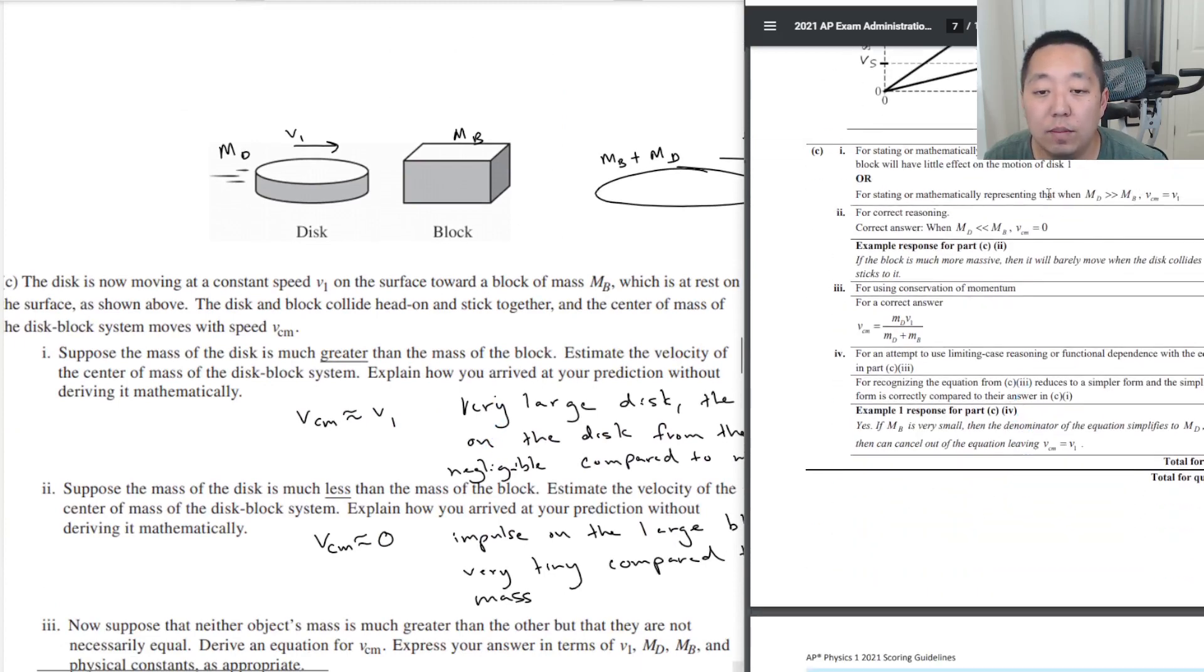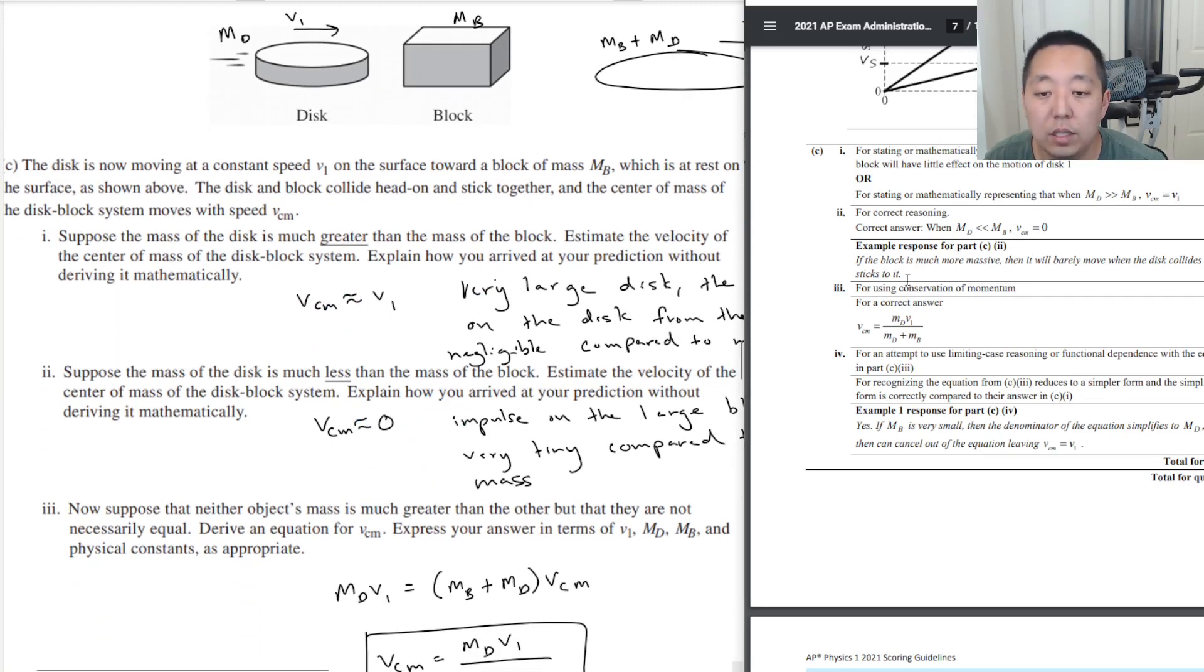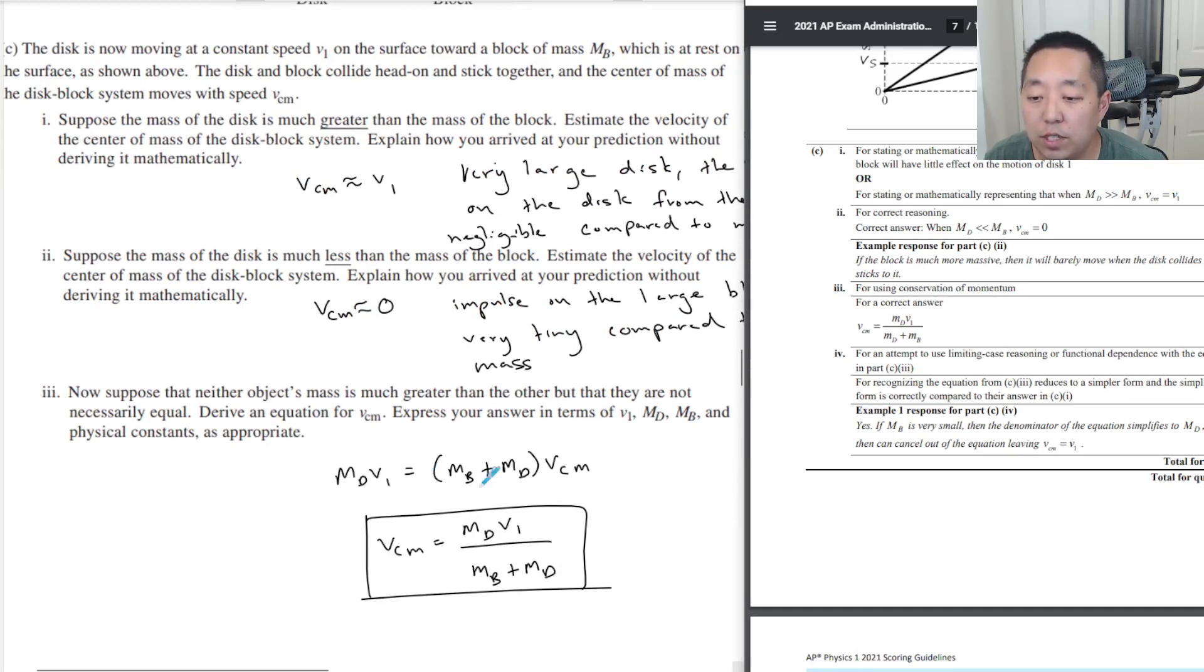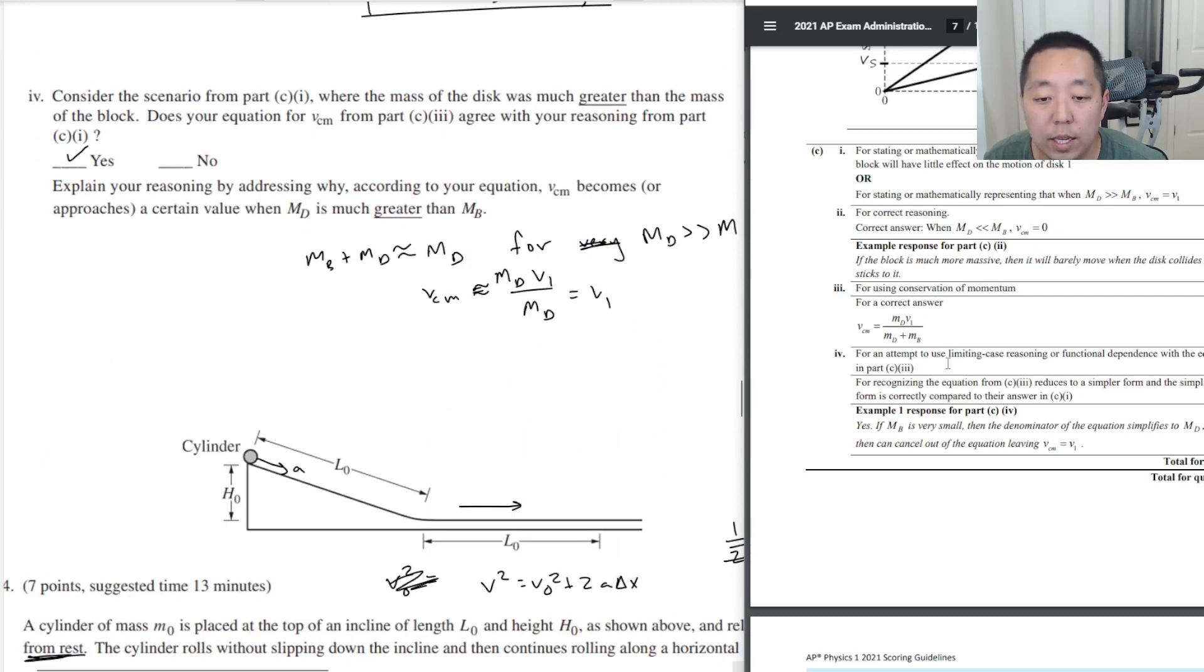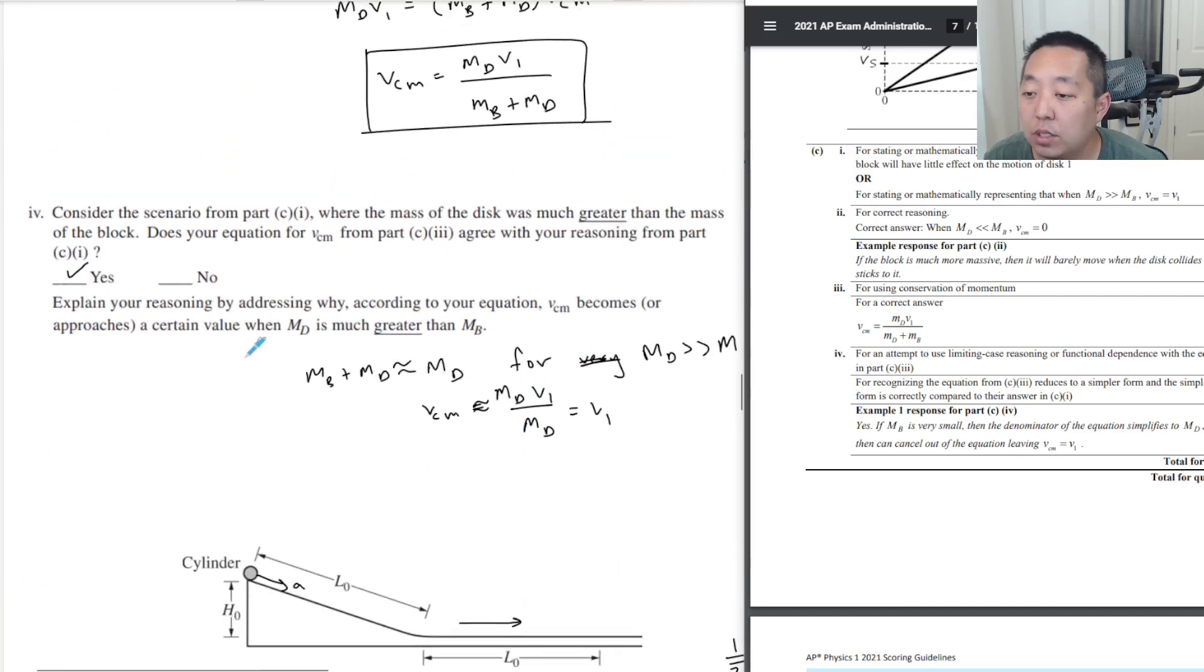For C, for mathematically representing when MD, VCM is equal to V1, that's what we have right here. For correctly answered that when M is less than VCM is about zero. And example response, you just have an explanation. I think my explanations were reasonable for that. For three, using conservation of momentum, which I did here, this is conservation of momentum and the correct answer MD V1 over (MB + MD). For an attempt to use a limiting case reasoning for functional depends with the equation. You're just explaining for MD. When MD is much greater than it looks like that, and so that would just equal... I think that is fair.